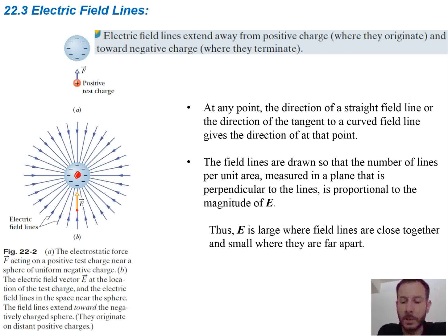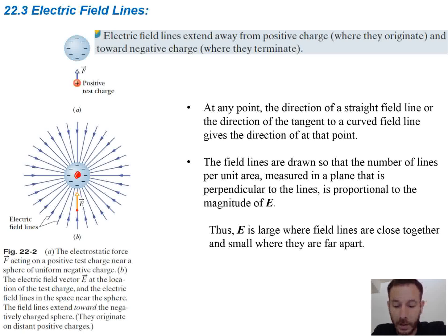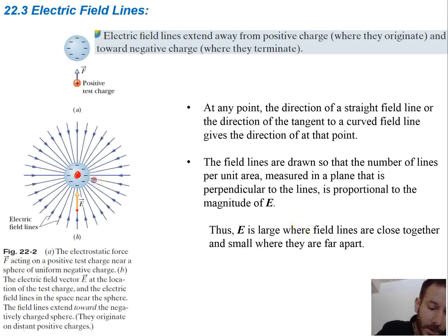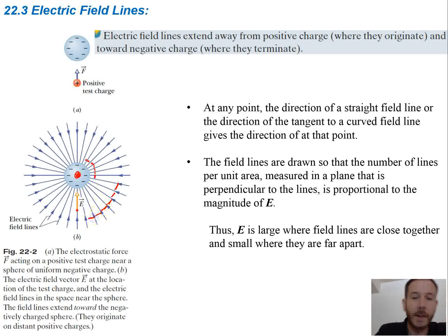In the next slide you'll see what some curved lines look like. The field lines are drawn so that the number of lines per unit area, measured in a plane perpendicular to the line, is proportional to the magnitude of E. So where the lines are very close together, the magnitude of the field is going to be large. Further away, the lines are further apart, and you're going to have less of a magnitude for the electric field.